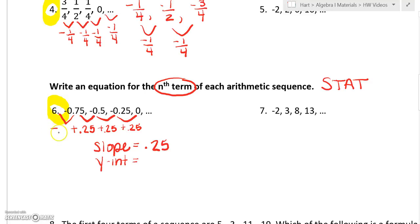Now we got to find the y-intercept. To do that we go backwards, so we'd have to subtract point two five, which would make it negative one. So over here would be negative one. Our y-intercept is negative one. So we just write it as an equation mx plus b. Our equation would be y equals point two five x minus one.